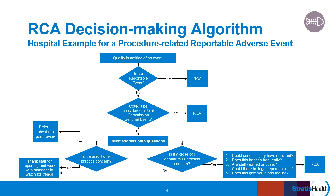This slide shows an example of a root cause analysis decision-making algorithm used by a hospital — this example is for a procedure-related reportable adverse event. An advantage of having an algorithm is that often when an event occurs, people are focused on dealing with the event, and you want to make it easy for them to know what should be moved to a root cause analysis and how to easily get that process started. When safety or quality leaders are notified of an event, they determine if it is a reportable event — meaning does the organization have a requirement to report to a state agency or other organization and to conduct an RCA? If yes, an RCA is done.